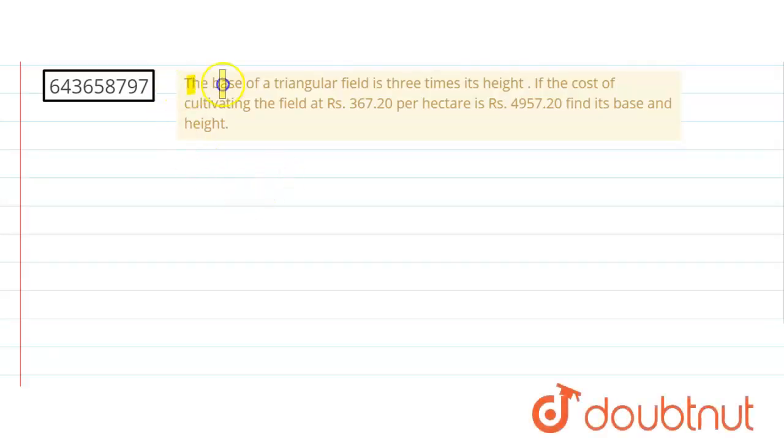question we have the base of a triangular field is three times its height. If the cost of cultivating the field at 367.20 rupees per hectare is 4957.20 rupees, find its base and height. So whatever the triangular field we have, we just need to find the height and base for that triangular field.